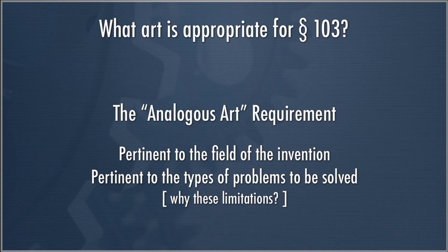Most inventions are combinations of old things put together in new and different ways. So given enough time and ability to combine, there's really no limit to the ways you could combine prior art to invalidate a patent under Section 103. Because that's a classic hindsight concern, the Federal Circuit has said you can only use prior art that's analogous. They draw that pretty broadly — it doesn't have to be exactly the same field as the invention; closely related fields are fine. But it is a requirement.